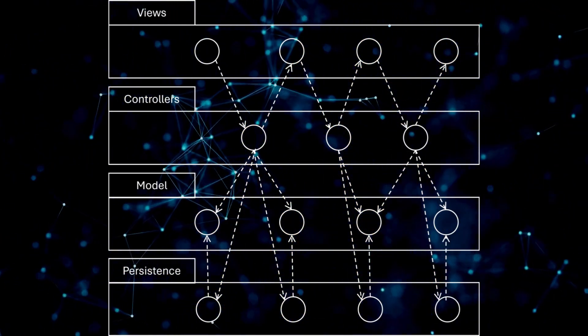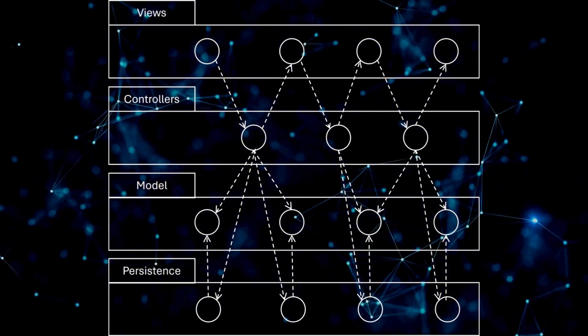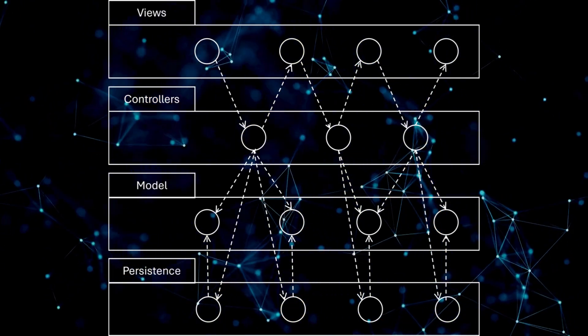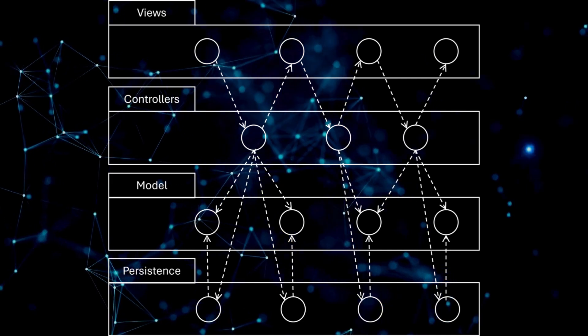When we package these modules up into layers, we get large amounts of coupling between the layers. So when we make a change to a module in one layer, we end up having to change a bunch of modules in other layers.